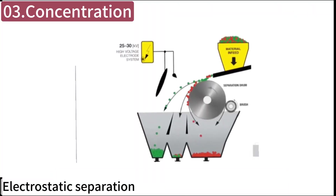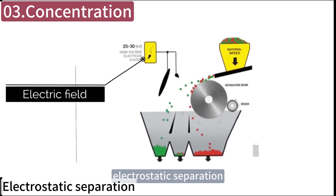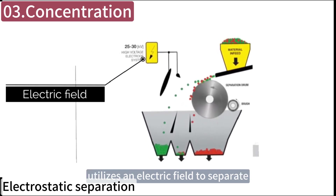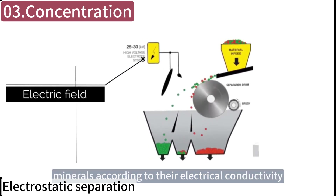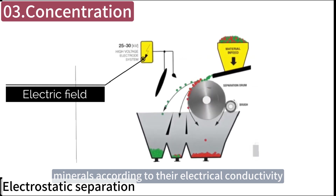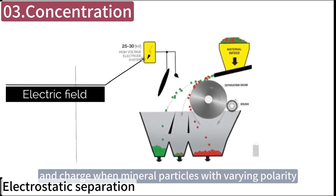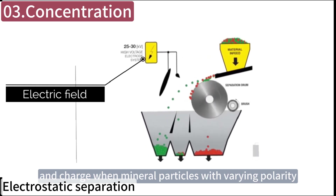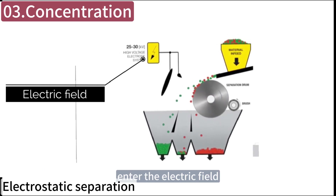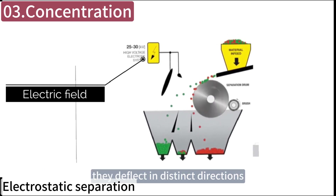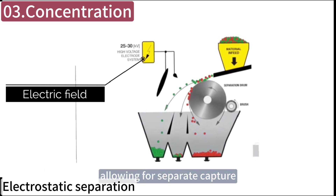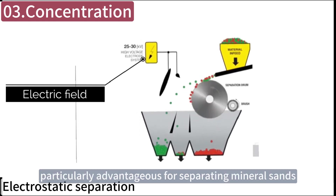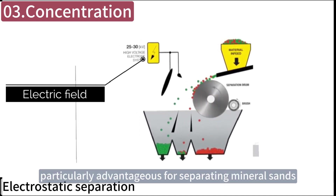Electrostatic separation utilizes an electric field to separate minerals according to their electrical conductivity and charge. When mineral particles with varying polarity enter the electric field, they deflect in distinct directions, allowing for separate capture. This method is particularly advantageous for separating mineral sands.